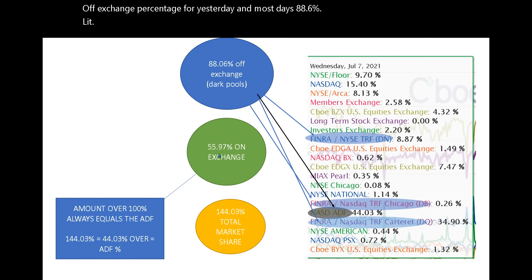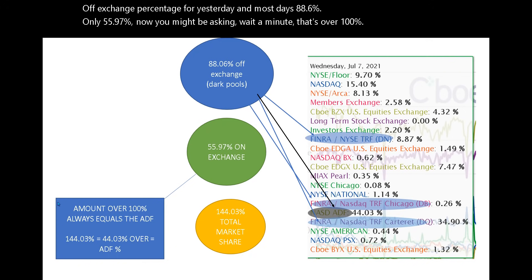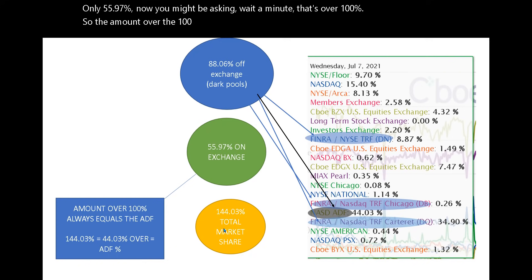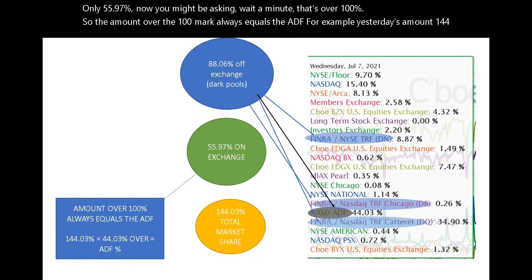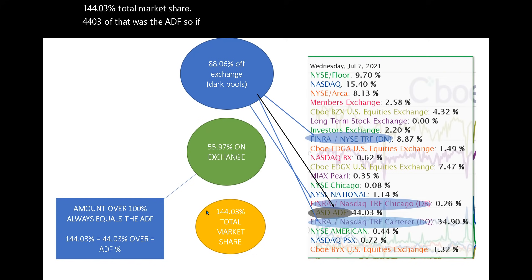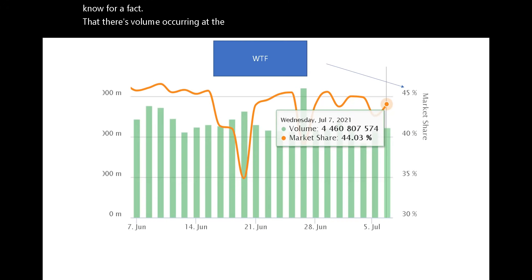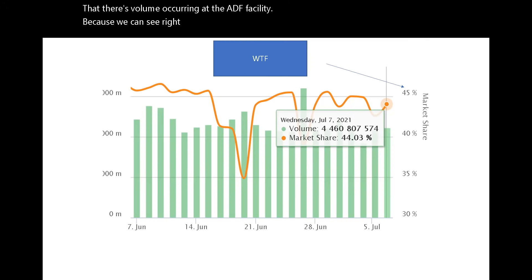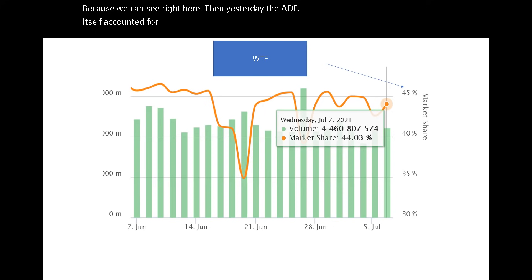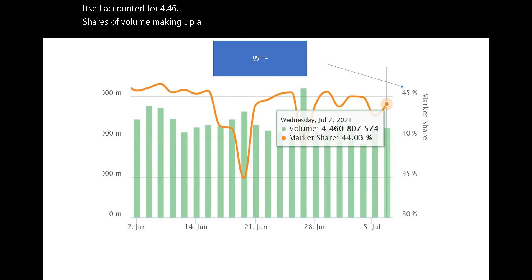Lit exchanges account for only 11.94%. Now, you might be asking — wait a minute, that's over 100%. Exactly. The amount over the 100% mark always equals the ADF. For example, yesterday's total market share was 144.03%. Well, 44.03% of that was the ADF, so if you took the ADF out of it, it would be 100%. However, we know for a fact that there's volume occurring at the ADF facility, because we can see right here that yesterday the ADF itself accounted for 4.46 billion shares of volume, making up a total 44% of the market.